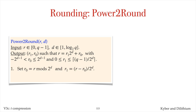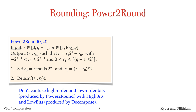r0 is defined to be r symmetric mod 2 to the d. So r0 is greater than minus 2 to the d minus 1, and at most 2 to the d minus 1. r1 is defined to be r minus r0 divided by 2 to the d. So r1 is a non-negative integer at most equal to (q minus 1) over 2 to the d, rounded up. I'll call r0 the low-order bits of r, and r1 the high-order bits of r. You shouldn't confuse low-order bits and high-order bits with low-bits and high-bits that were defined earlier using the decompose function.